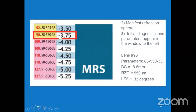Here, minus 3.75 is your MRS value. Your initial lens parameter will appear on the left side of the window: first trial lens parameter is 88, 550, and 33. So 88 is your base curve, 550 is your return zone depth, and 33 is your landing zone angle.